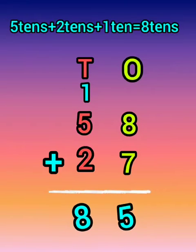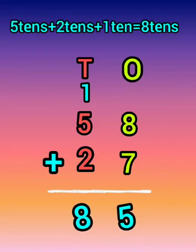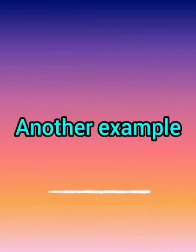Now the answer is 85. 58 plus 27 is equal to 85. Now we will see one more example.